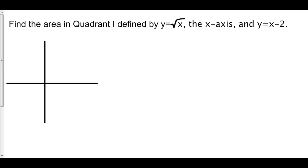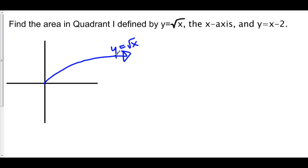Let's take a look at a problem where we have to break up our area into two separate integrals. We're going to find the area in quadrant one, defined by the graph y equals the square root of x, which is half of a sideways parabola, the x-axis, and the line y equals x minus 2.